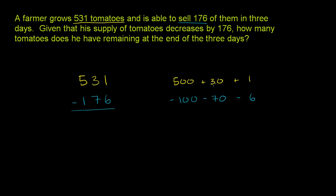The 3 in 531, it's in the tens place, so it's really representing 30. The 1 in 531 is in the ones place, so it represents 1. And now it'll be a little bit clearer what we're doing when we're borrowing or regrouping on this problem right over here.